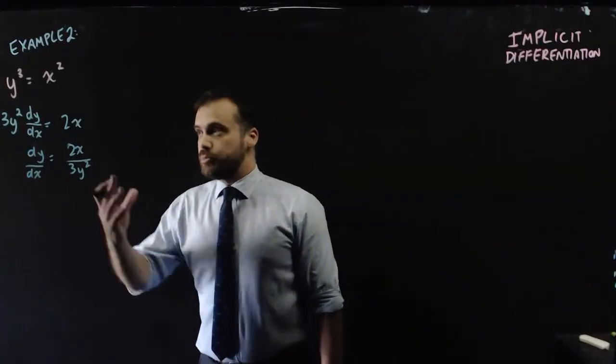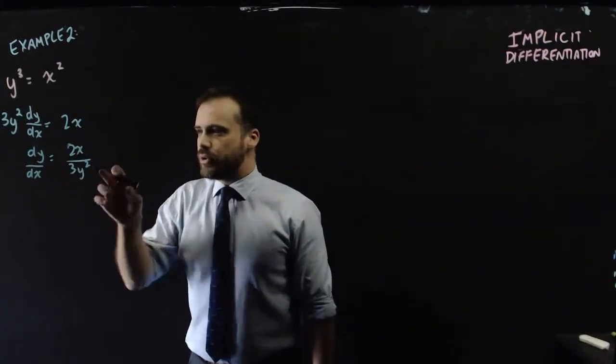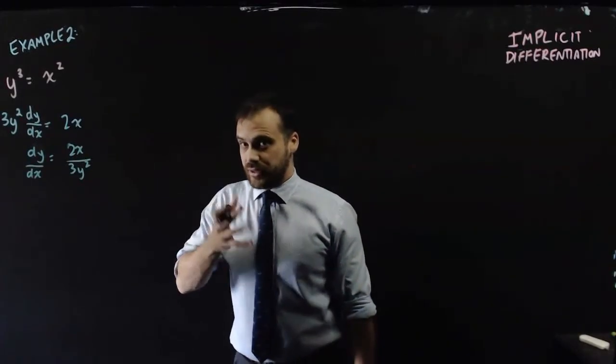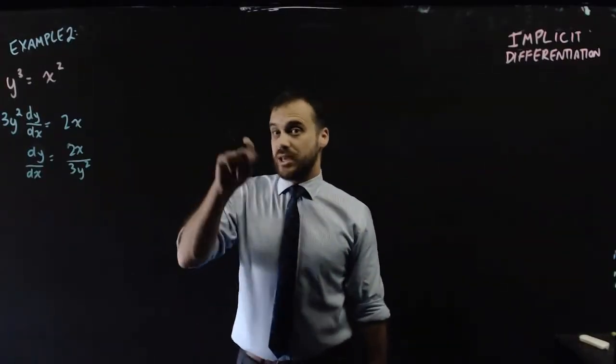Now, if you want to know the slope of this particular relationship or relation at any point, just sub in the x value and sub in the y value. And you'll know the gradient at that point. And that is different to explicit differentiation where you just need to sub in the y.